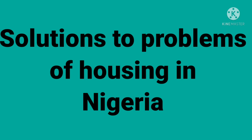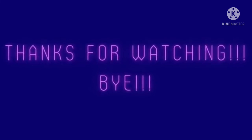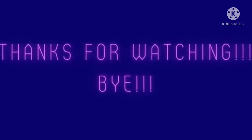Solutions to housing problems in Nigeria: families should reduce the number of children they give birth to, enabling them to save and have their own houses. The government should give housing loans or grants to citizens to reduce the effects of the housing problem. The government should also be involved in building and leasing houses to citizens.